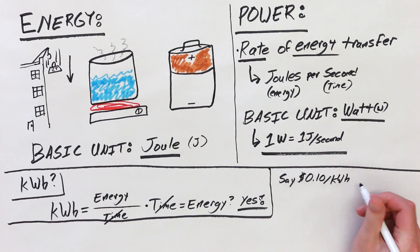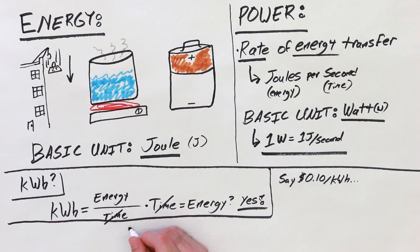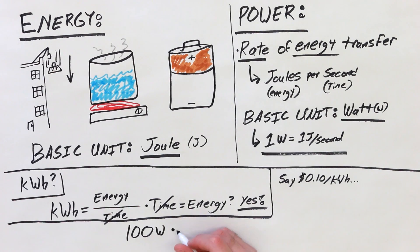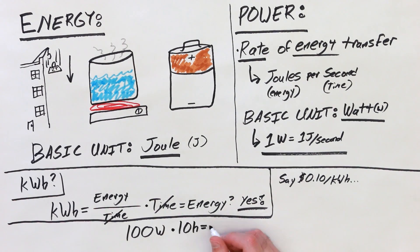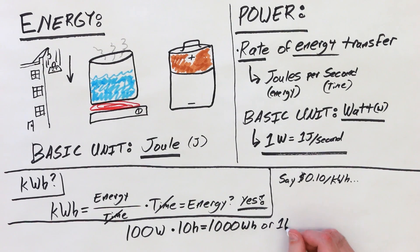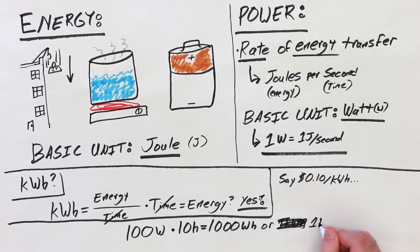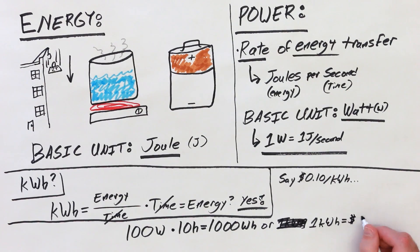Electricity energy is typically billed in kilowatt hours. So, for example, you could determine the cost of operating a 100-watt light bulb for 10 hours by multiplying 100 watts times 10 hours, which equals 1,000 watt hours, or 1 kilowatt hour. Remember, kilo is the metric prefix for thousand. This same approach can be used to estimate the cost of charging an EV.